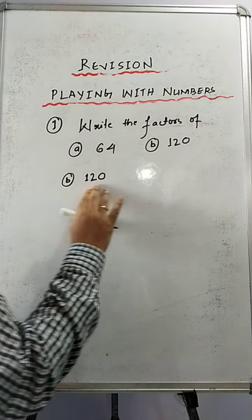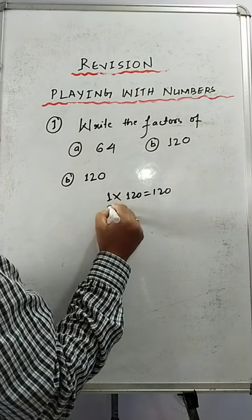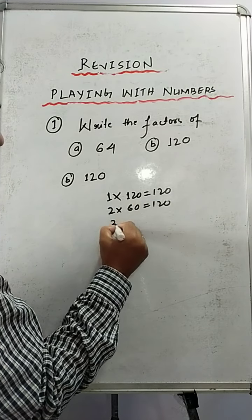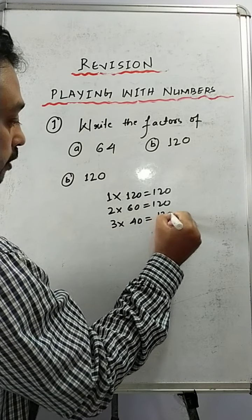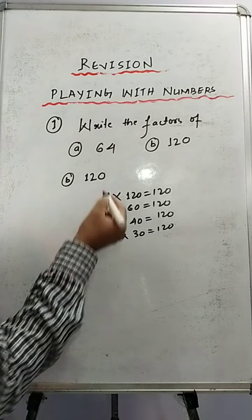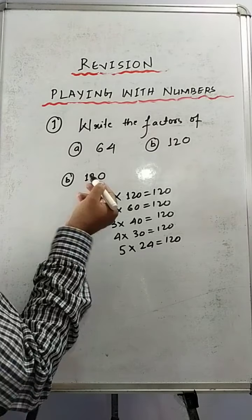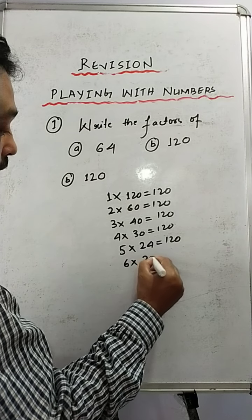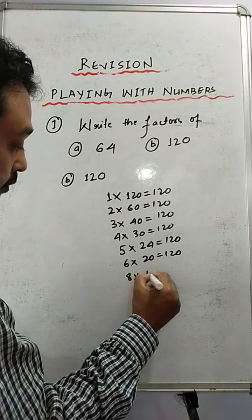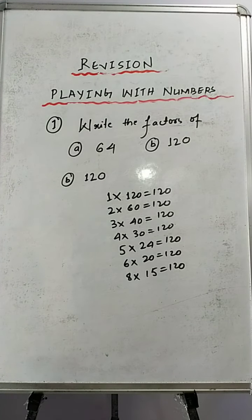The second part of the question, we have 120. So same way: 1 into 120 is 120. It is divisible by 2 — 2 into 60 is 120. Divisible by 3 also — 3 into 40 is 120. Divisible by 4 also — 4 into 30 is 120. Divisible by 5 also — 5 into 24 equals 120. Divisible by 6 also — 6 into 20 equals 120. Not divisible by 7, but divisible by 8 also — 8 into 15 is 120. So these are the factors of 120.